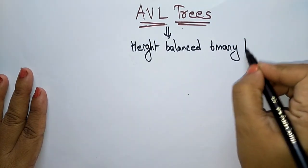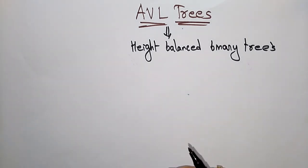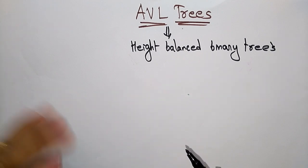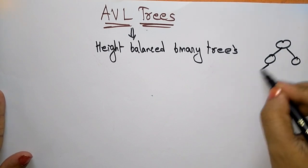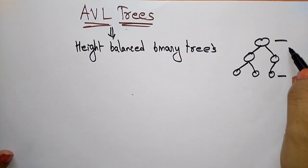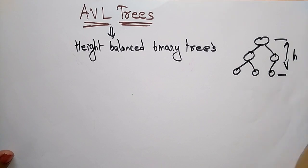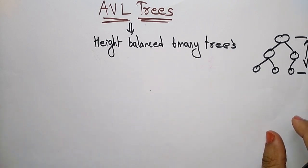We are concentrating on height balance — whatever tree you have, you have to maintain the height balance. The height is measured from the root node to the leaf node. So why do we need to find the height, and why do we want to maintain balance on every binary tree?